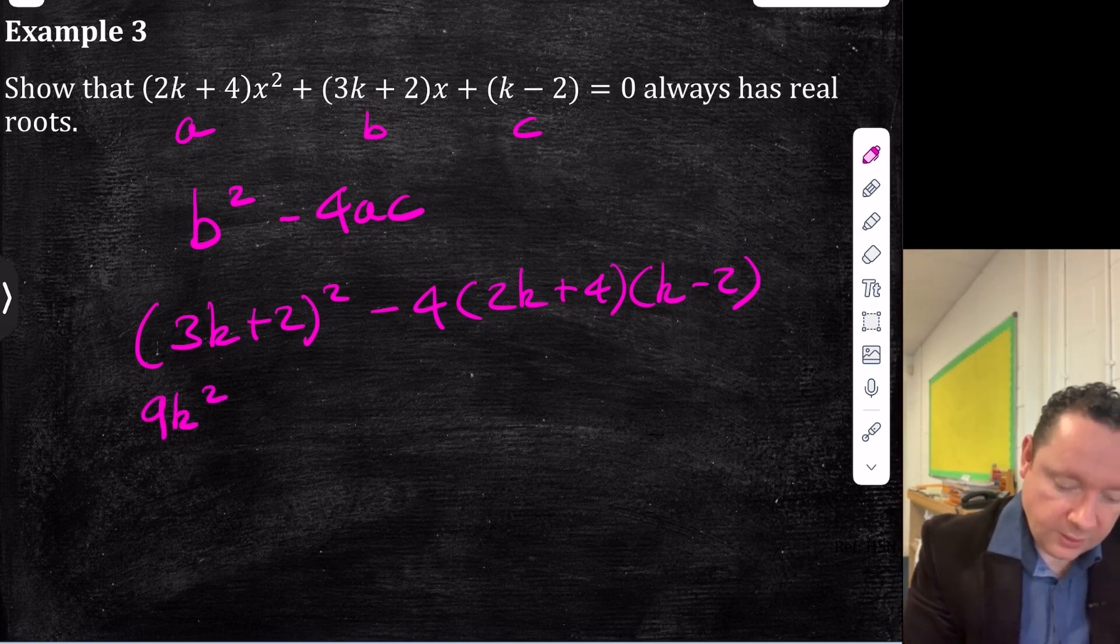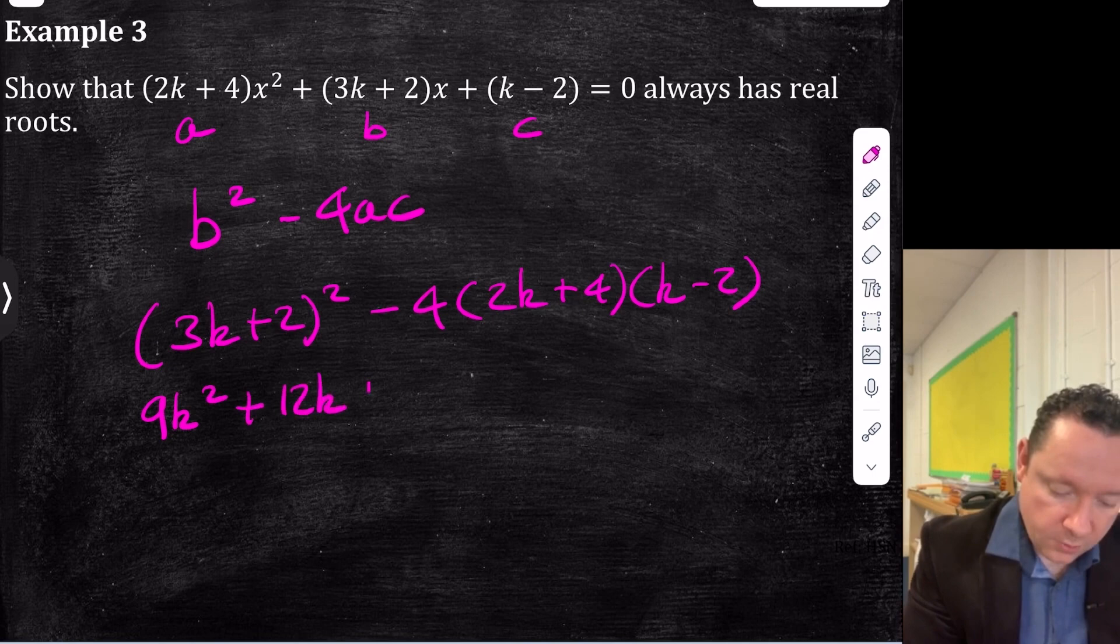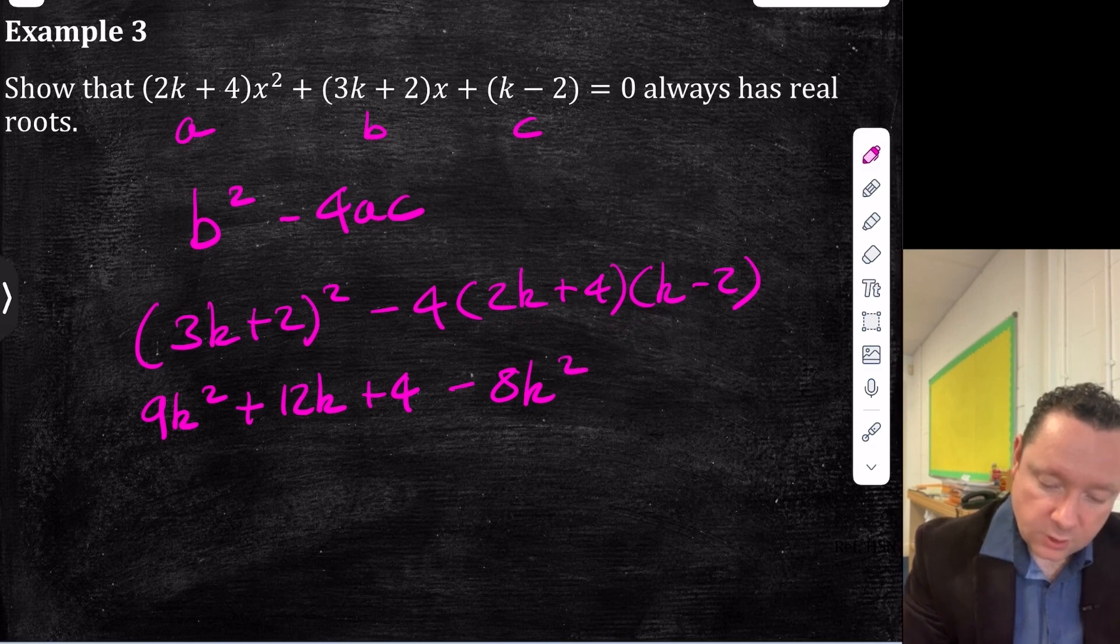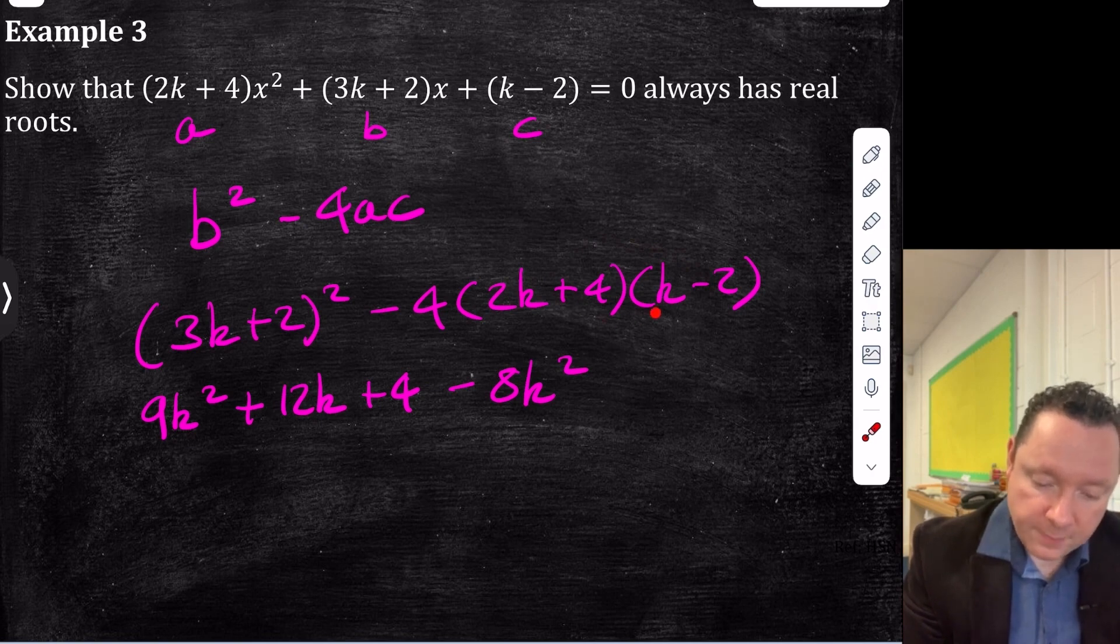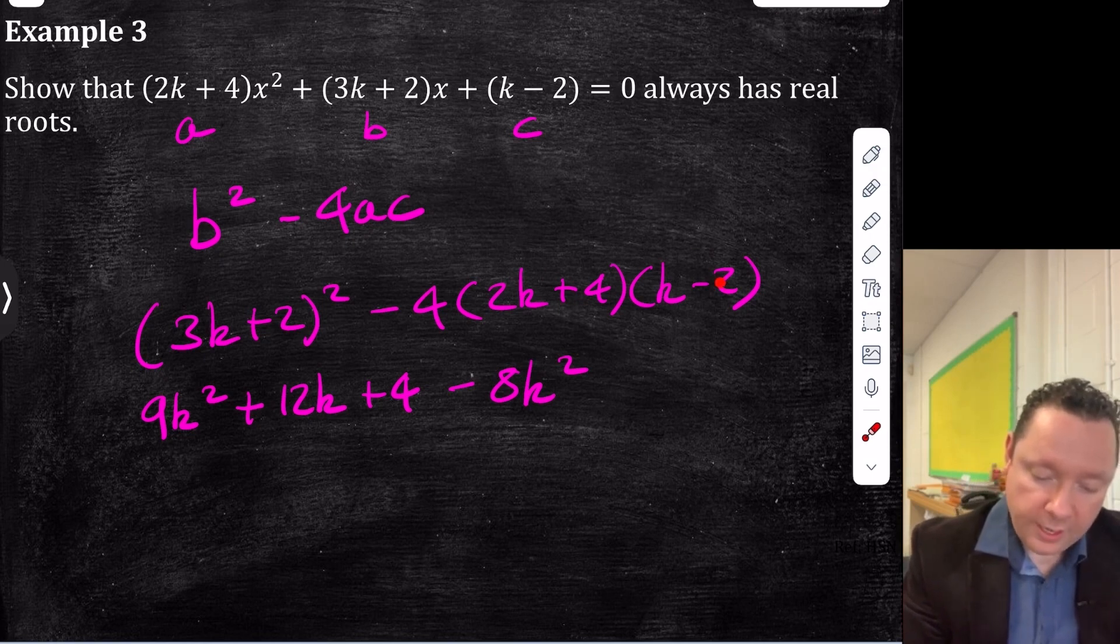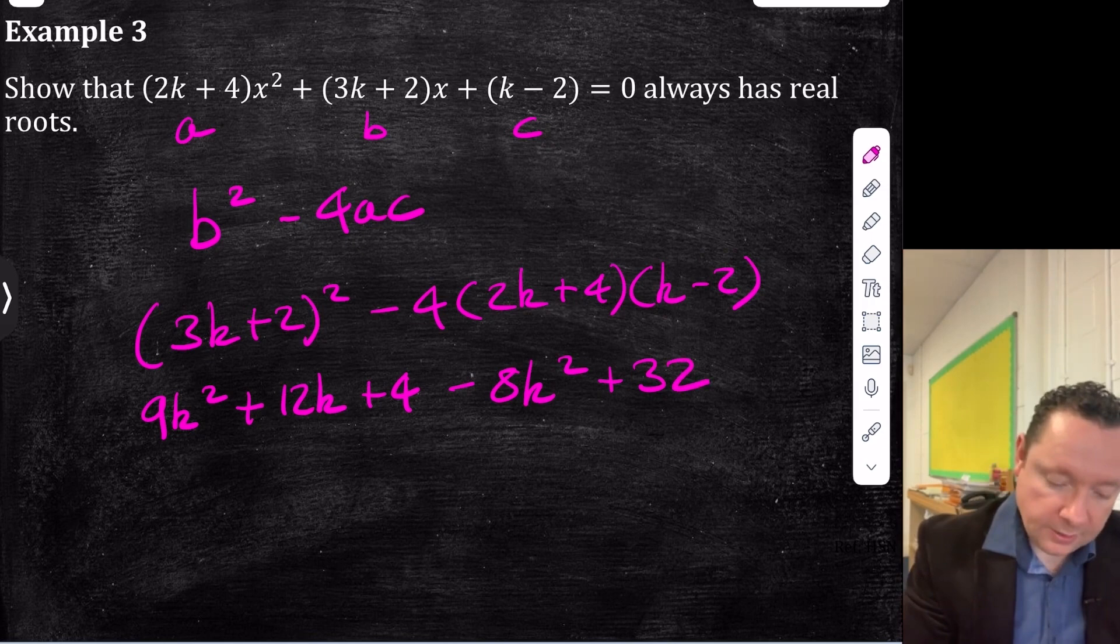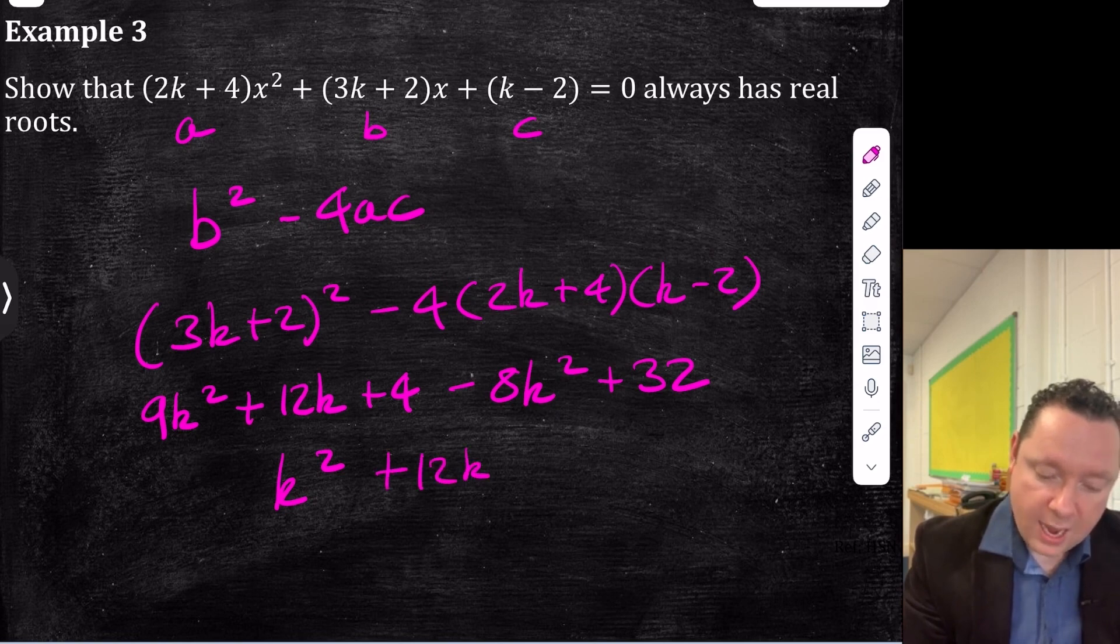So we expand the bracket. 9k squared. Two threes are 6, so I double that to get 12k plus 4. And then expanding the second bracket quickly, we get 2k times k is 2k squared, minus 4. So minus 8k squared for the squared terms. And then the k terms, we've got minus 4k but plus 4k, so that's 0. So 0k terms there. And then we've got 4 times 2 is 8, so that's minus 8 times minus 4 is 32. Plus 32. Collecting the terms, we get k squared plus 12k. And 4 plus 32 is 36.